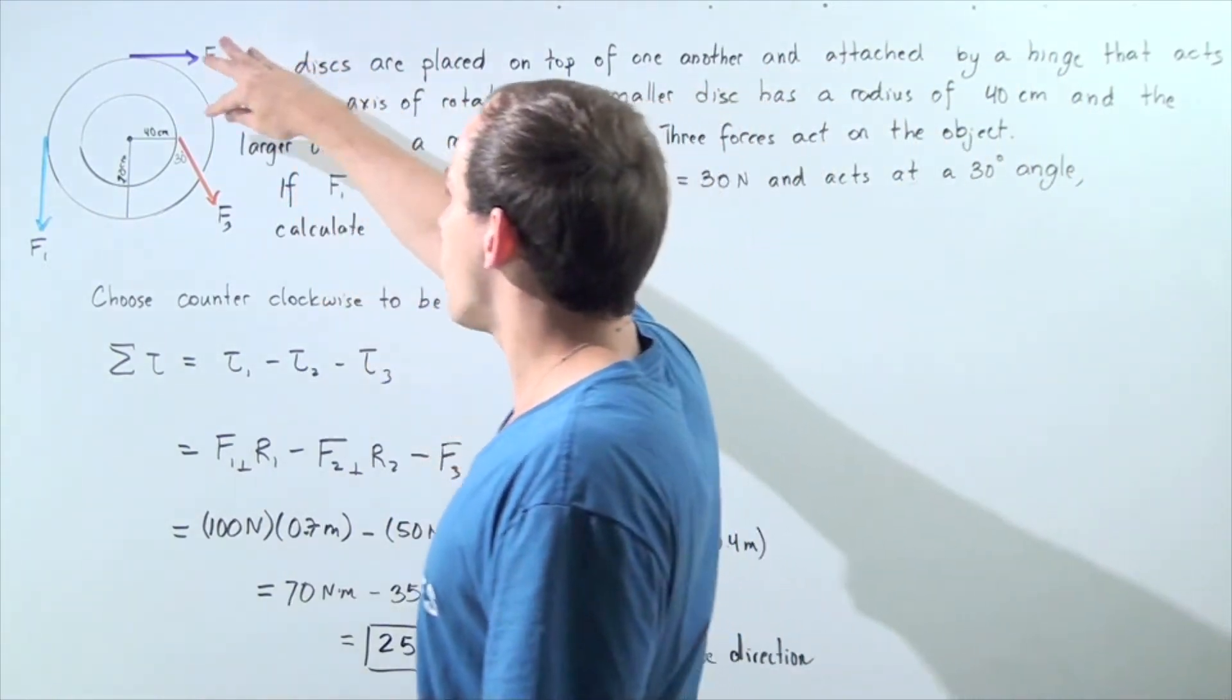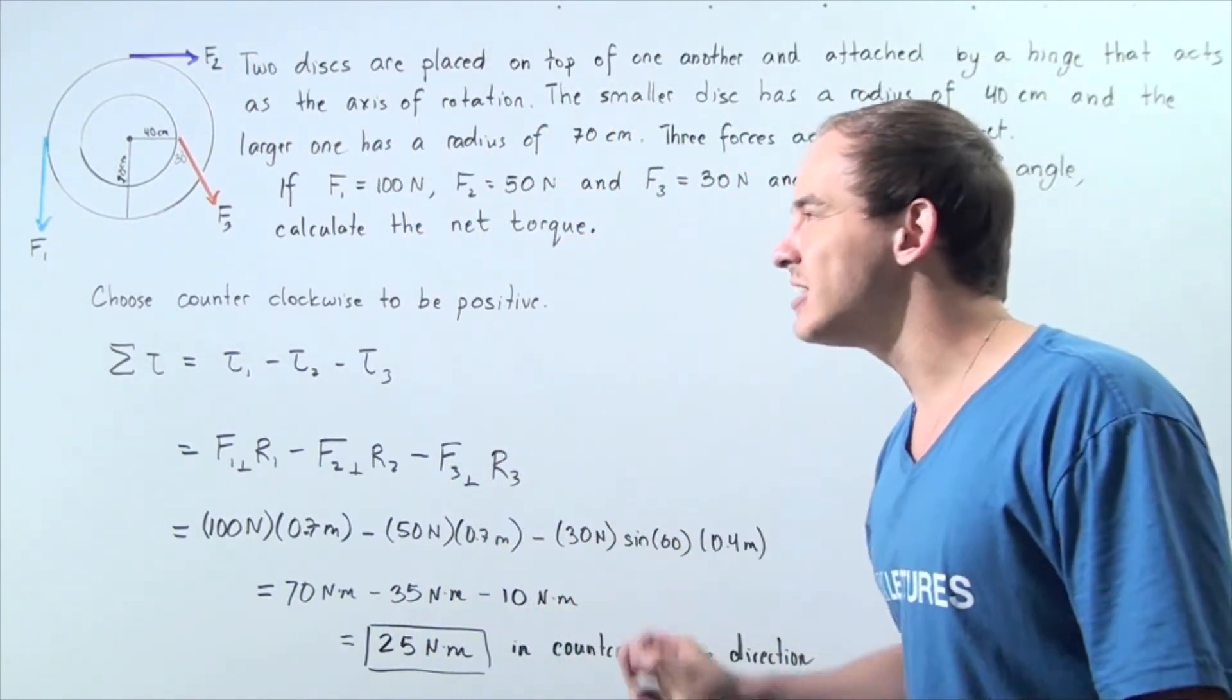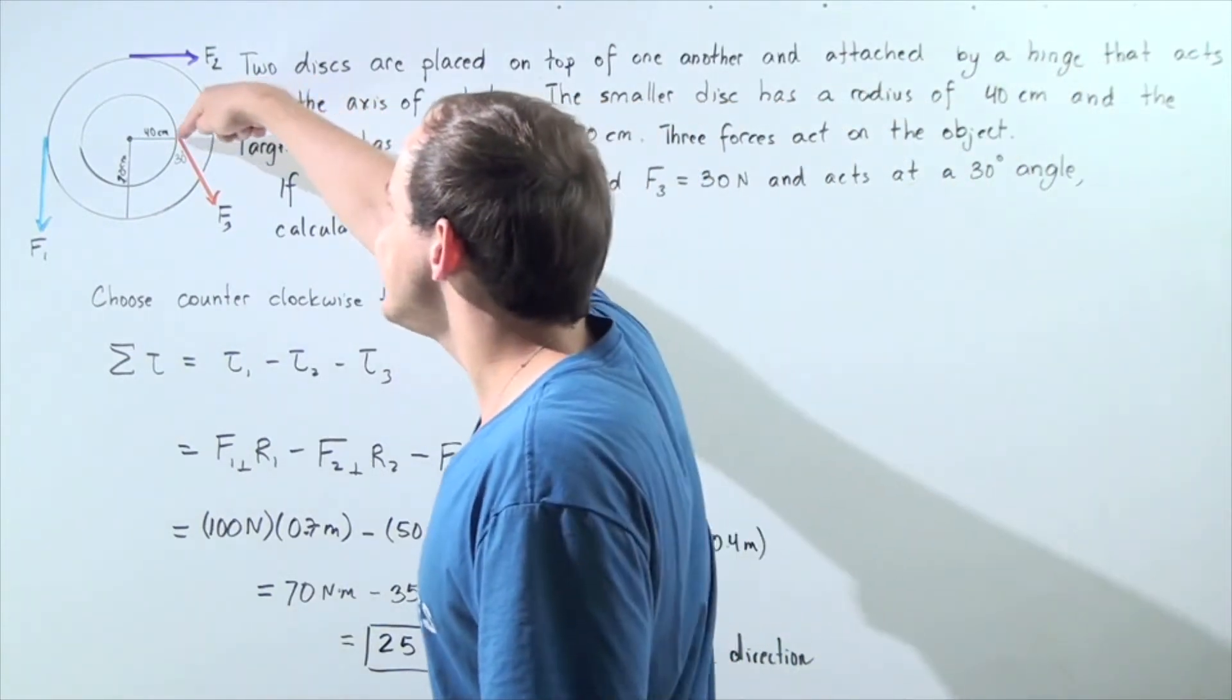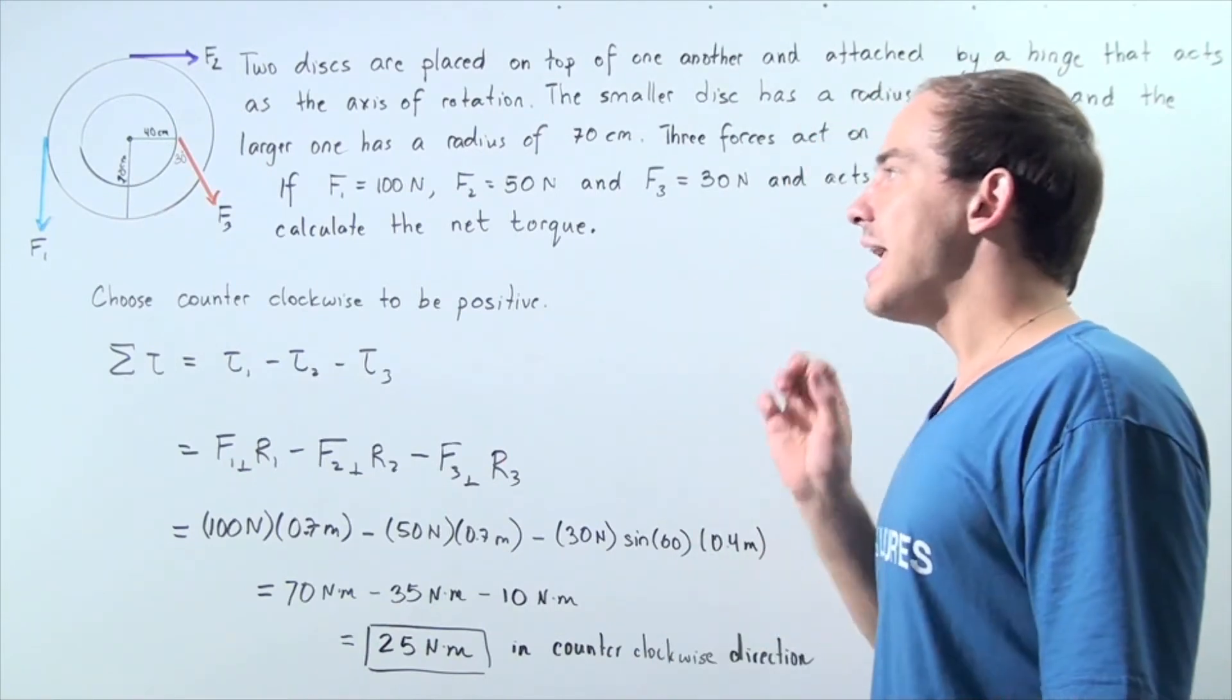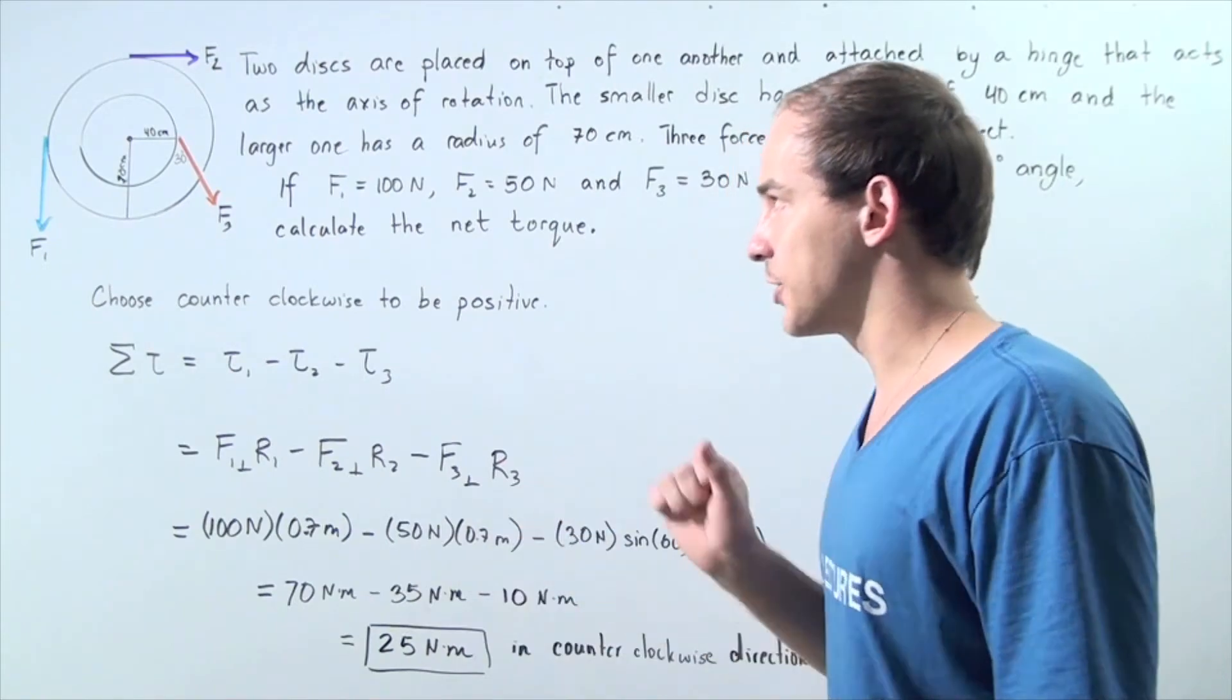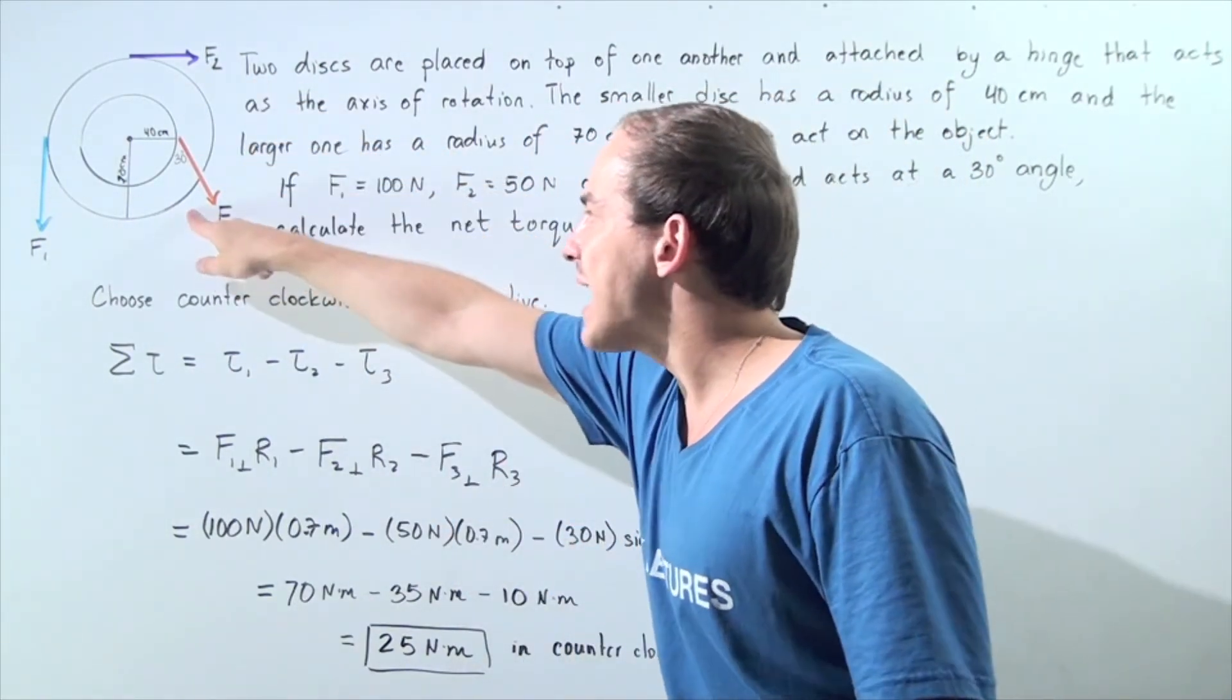Now, the only tricky part is force number three. Force number three acts at a 30 degree angle with respect to the y-axis and a 60 degree angle with respect to the x-axis. So in order to calculate the force that acts perpendicular to the smaller disk, we have to take the magnitude of force three...